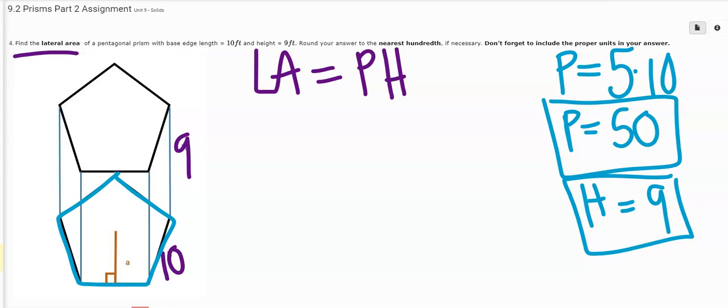So now I can just take this and just multiply these out. So 50 times 9. When I multiply that out, I'm going to get 450.